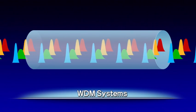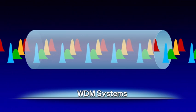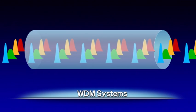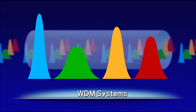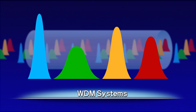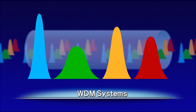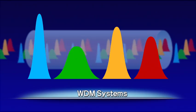WDM systems use different wavelengths to transmit multiple optical signals over a single optical fiber. But they have several technically difficult aspects, including non-uniform optical signal power and chromatic dispersion.